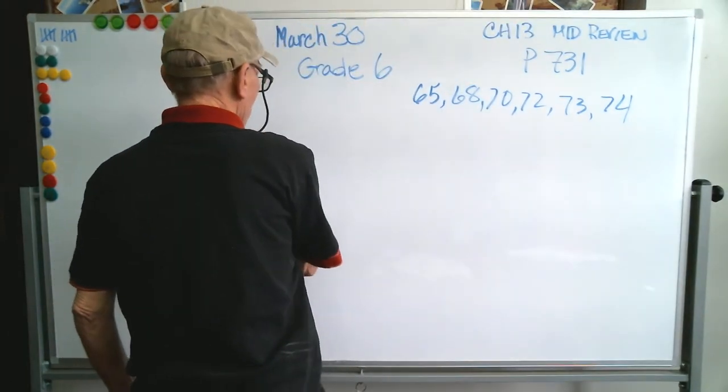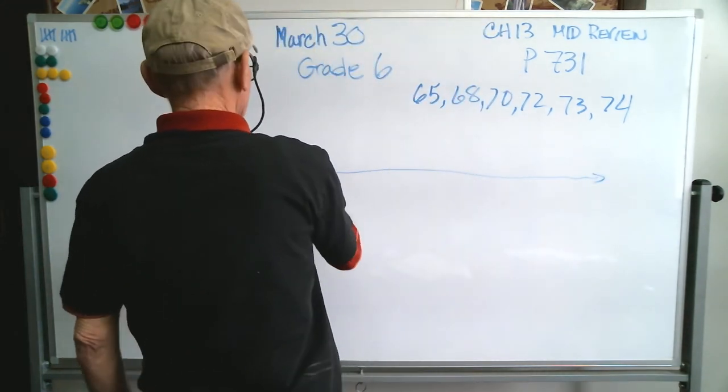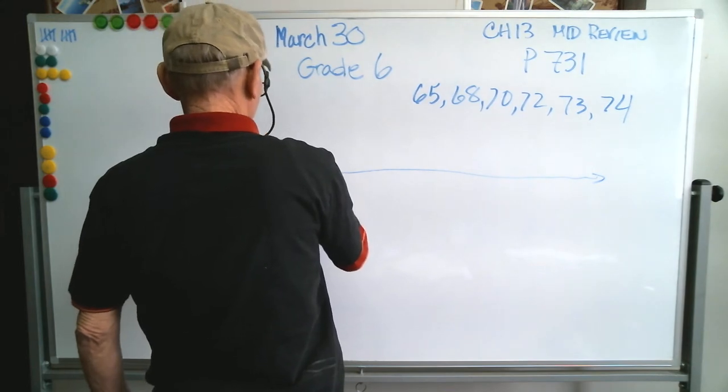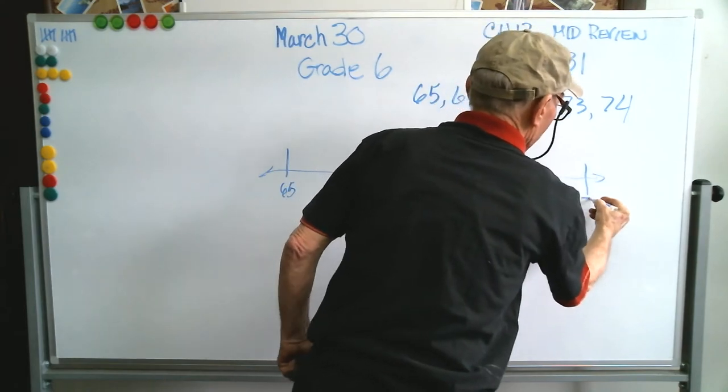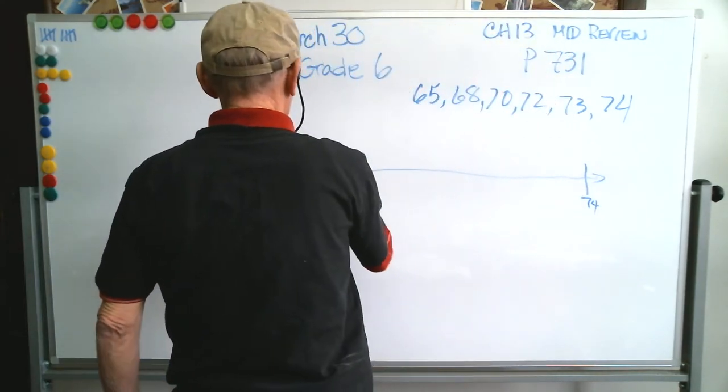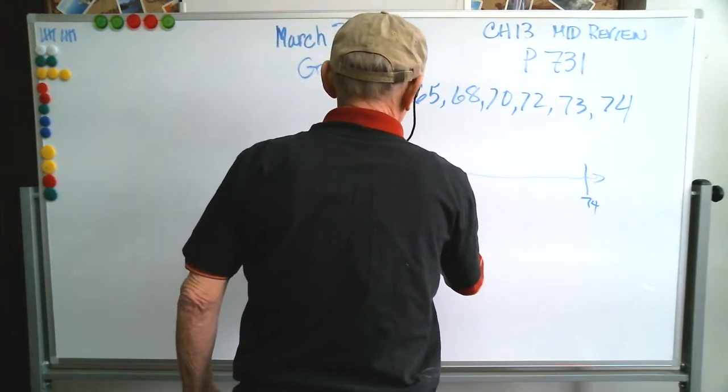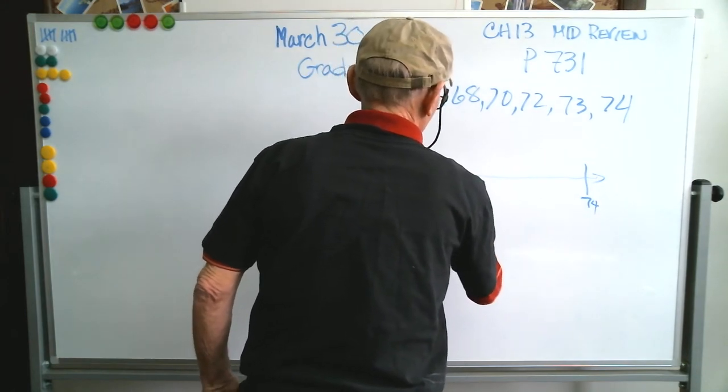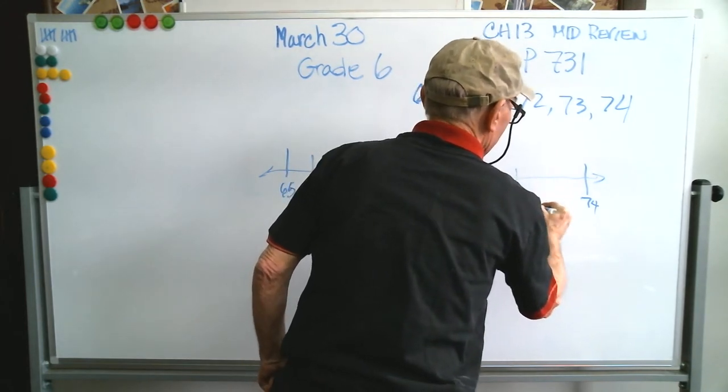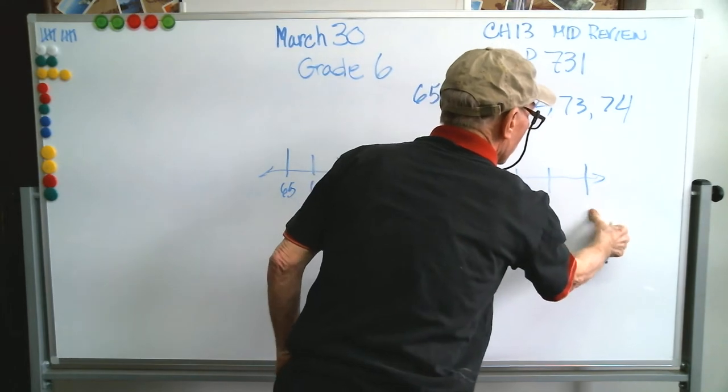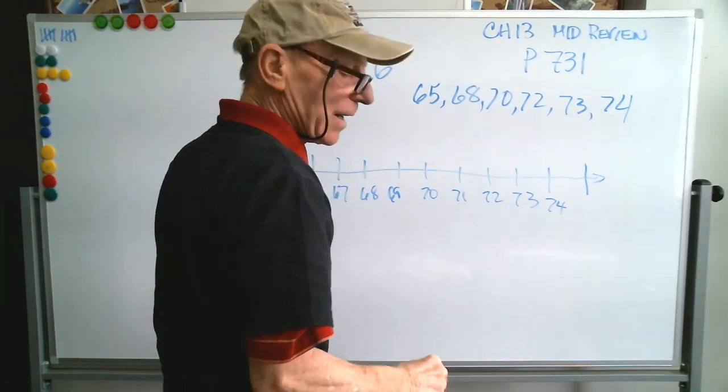So let's do our line, and we know that our data set is going to fall between 65 and 74. So 65, 66, 67, 68, 69, 70, 71, 72, 73, 74. There's our number line.